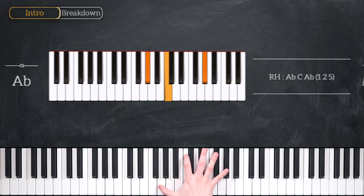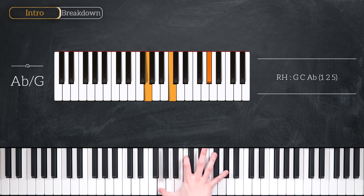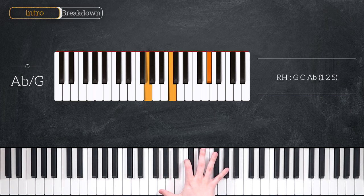Our second chord is an A flat over G chord. That's a G, C, and A flat in the right hand. Now that stretch is slightly more than an octave, so if you can't reach, don't worry, because we're not going to be playing it as a block chord. We're going to be stretching it as an arpeggio.